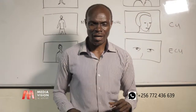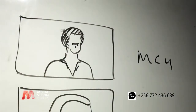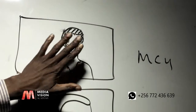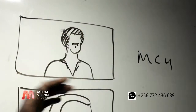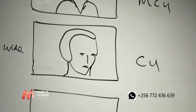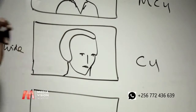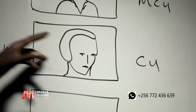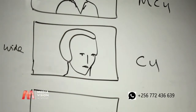Then we looked at the medium close-up. It is a shot taken right from the head to just below the shoulder, somewhere in the middle of the chest. Then we looked at the close-up — a shot we take from the head to just below the chin.